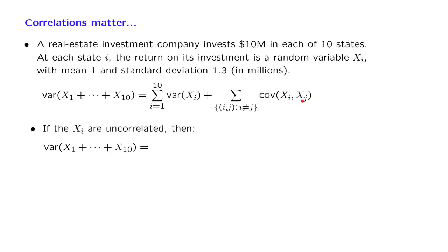Now, you make the assumption that the different states are different markets. One doesn't affect the other, so that the Xi's are uncorrelated. In that case, in this variance formula, the covariance terms are all 0, and they disappear. And you're left with the sum of 10 variance terms. Each one of these variances is equal to the square of the standard deviation.